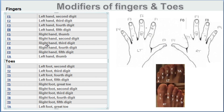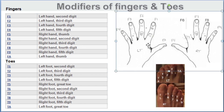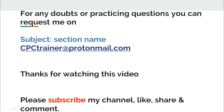These are the modifiers for fingers and toes, which indicate the correct and exact location. For toes: TA, T1, T2, T3, T4, T5, T6, T7, T8, T9. For fingers: FA is the left thumb, F1 through F4 for left fingers, F5 is the right thumb, and F6 through F9 for right fingers.